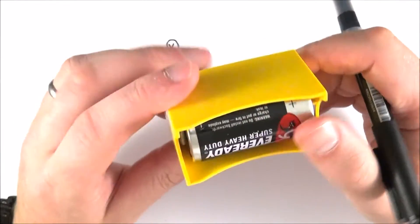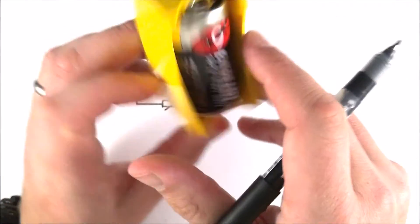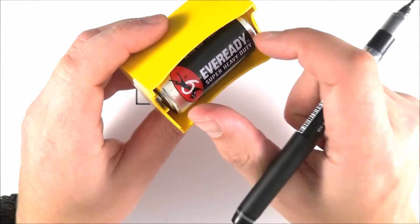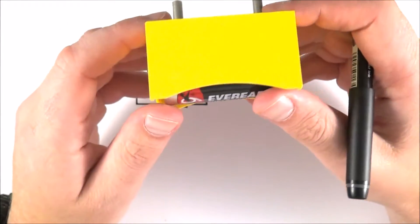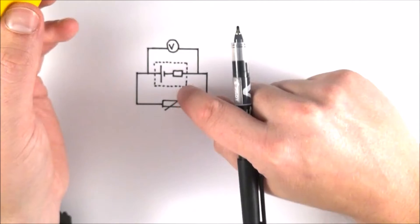In this component holder, we have a D-size battery or cell, and we can use this to measure its internal resistance. This is a fairly standard practical.